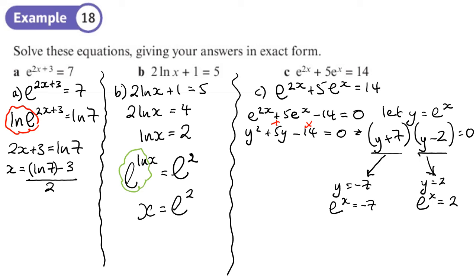log e to the x, log minus 7. Do you remember what we said? You can't do the log of a negative number. So actually you don't get a solution from this. No solution from this one.